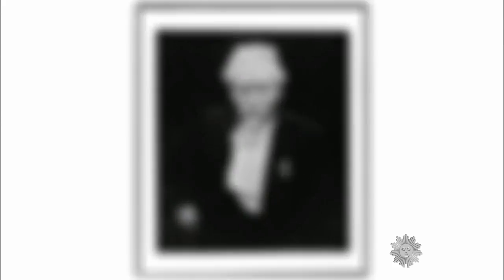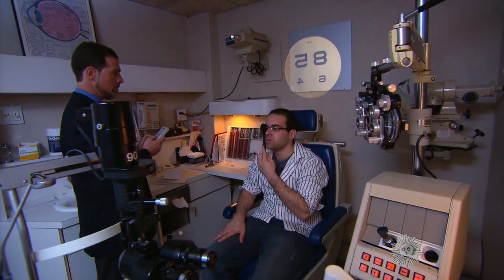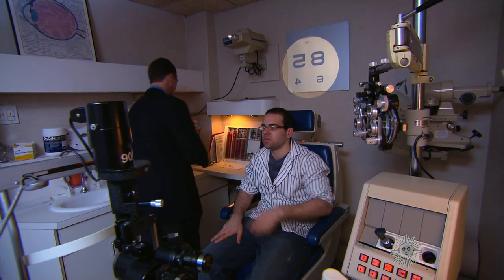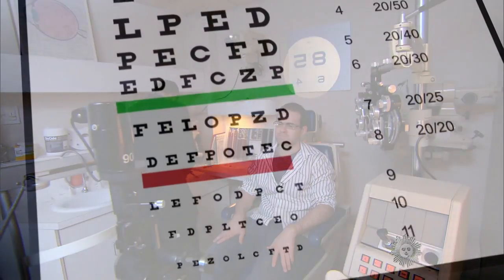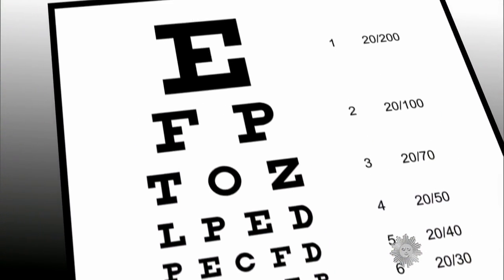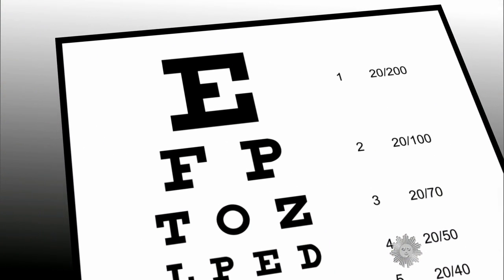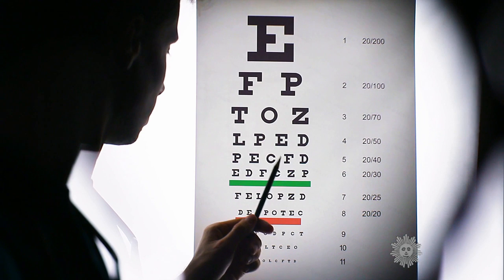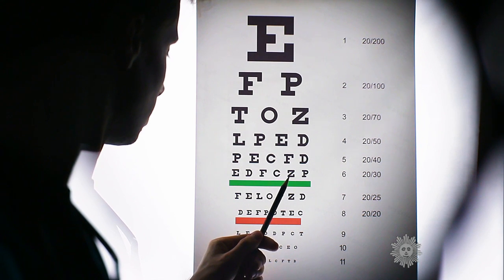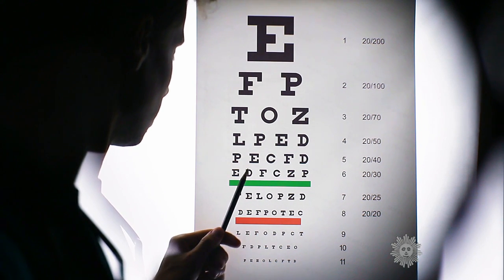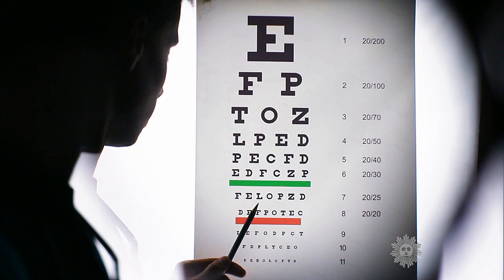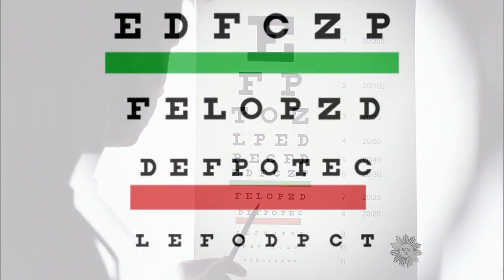You may not recognize his name, but if you've ever gone to the eye doctor, you will certainly recognize his namesake creation. It's the eye chart, the one with the big letter E on the top. The Snellen chart features 11 lines of progressively smaller letters, and not just any letters. The Snellen chart uses just nine.